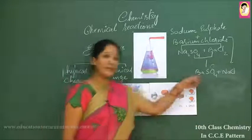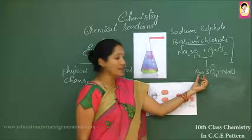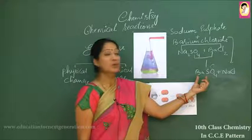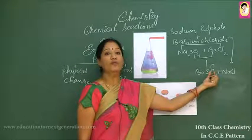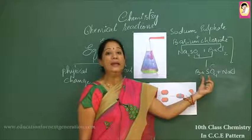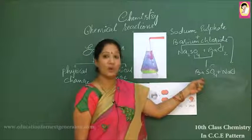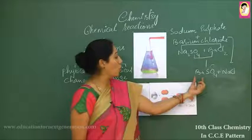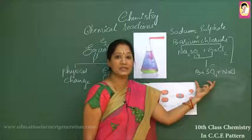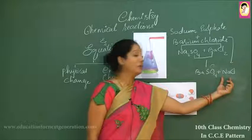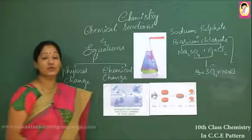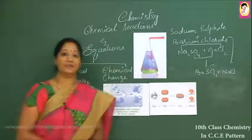From this equation it is clear that one barium atom reacts with one sulfur atom and four oxygen atoms, giving rise to barium sulfate. It saves time and gives a complete picture of the reaction — how many atoms of barium, sulfur, and oxygen are present and how they participate to give rise to the new component barium sulfate.